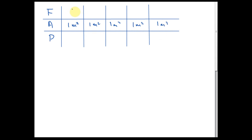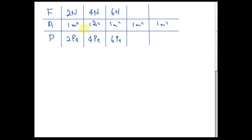If the force given is 2 newtons, the pressure is 2 pascals. If the force is 4 newtons — two times the previous — the pressure becomes 4 pascals. If the force is 6 newtons, the pressure becomes 6 pascals. When the force increases by two times, the pressure increases by two times. When the force increases by three times, the pressure increases by three times. We call this relationship directly proportional.